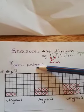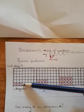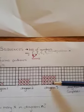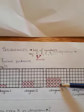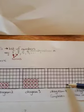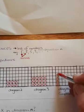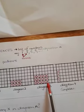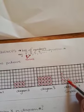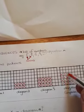Sequences very often form patterns. For instance, we have one row with three crosses, the next diagram shows two rows each having four crosses, and the next shows three rows with five crosses. Every time we have one cross more and one row more. When asked to complete diagram four, we have four rows and six crosses, giving us a total number of crosses for diagram four.